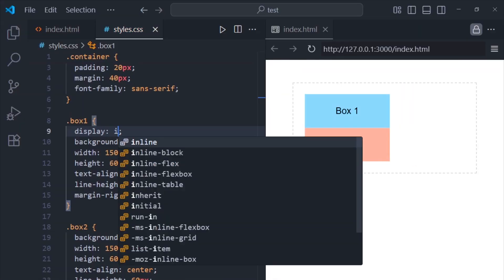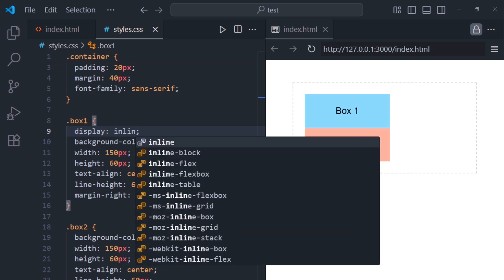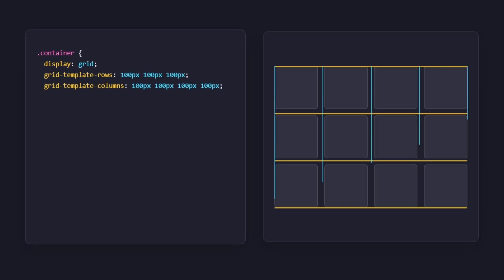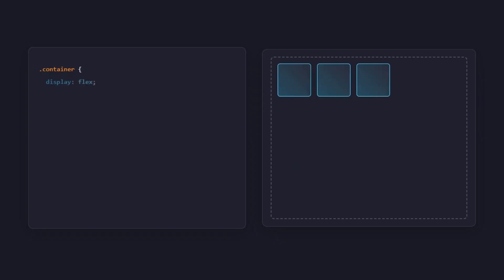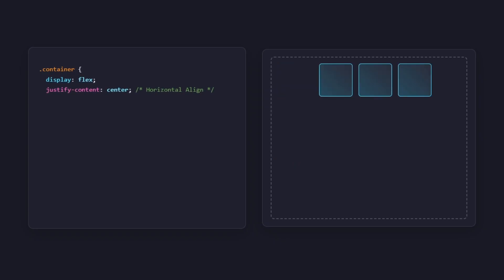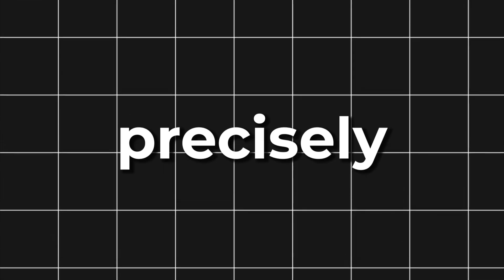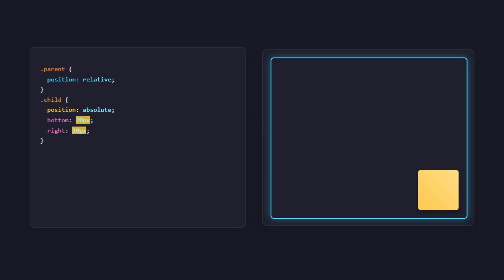The display property determines how elements behave. Inline elements flow with text, block elements take up the full width of the container, and inline-block gives you the best of both worlds. CSS Grid lets you design two-dimensional layouts with rows and columns at the same time. But in most of your projects and throughout your career as a front-end developer, you'll mostly use Flexbox. Flex makes it easy to align items both horizontally and vertically using properties like justify-content and align-items. If you want to position elements precisely, you can set the parent to position: relative and the child to absolute, then adjust top, left, right, or bottom values.